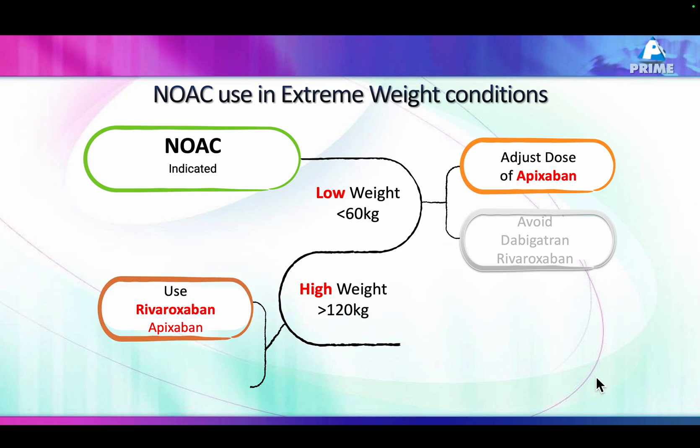Dabigatran and rivaroxaban should ideally be avoided in low-weight patients, otherwise the dose would increase in the plasma because the distribution volume is small. In a weight more than 120 kg, we can use either rivaroxaban or apixaban, but dabigatran's absorption and plasma volume would reduce the effect of the drug. So at extremes of weight, apixaban is the ideal choice; dabigatran is not.